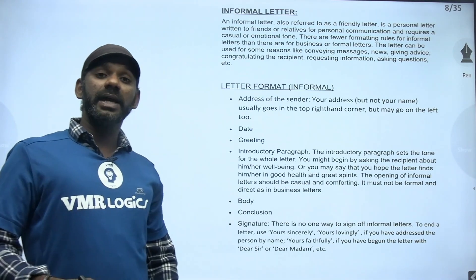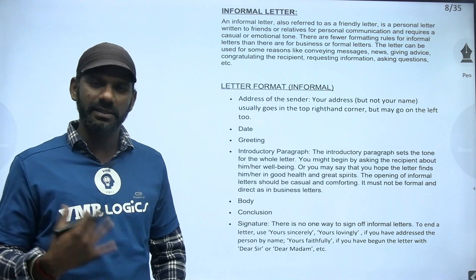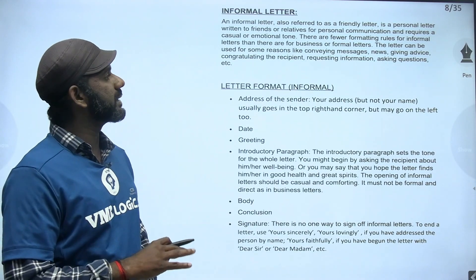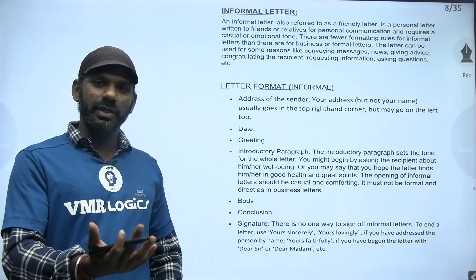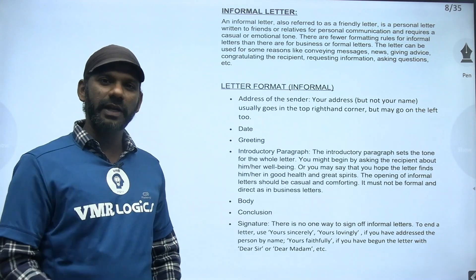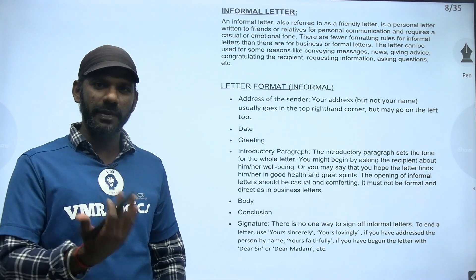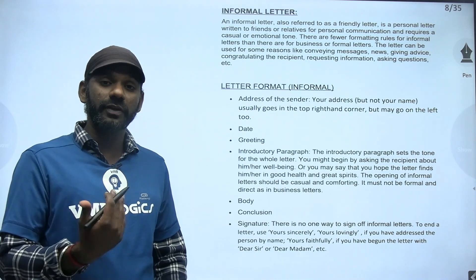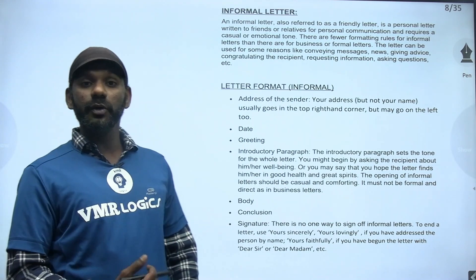A formal letter should never be casual; there's no need for an emotional tone in a formal letter — just be official, just be formal. But in the case of a personal letter, an informal letter requires a casual or emotional tone. Writing to our parents we may go emotional sometimes; writing to our friends we do it in a casual manner, because we don't follow strict etiquette while communicating with friends or family.